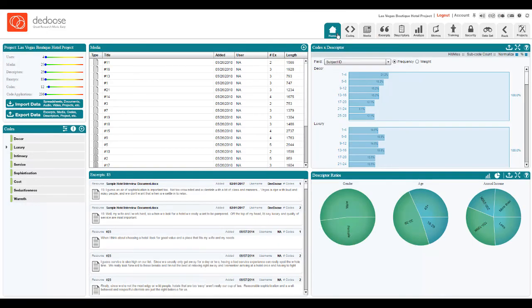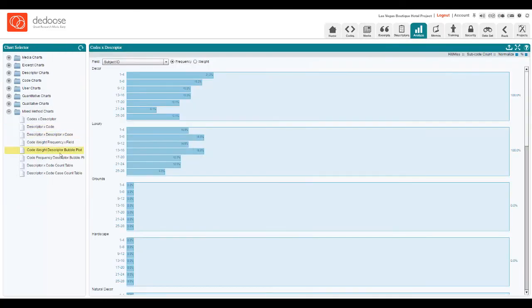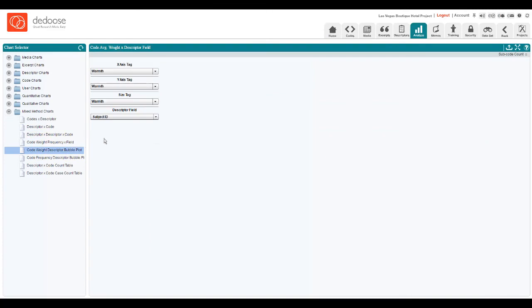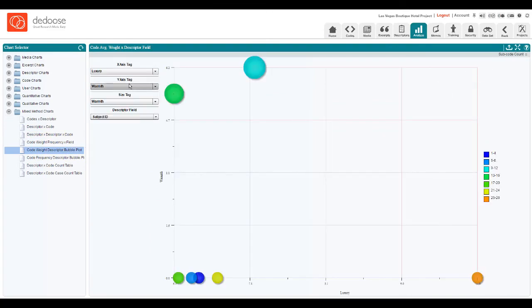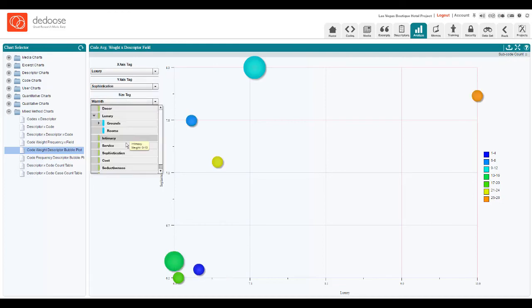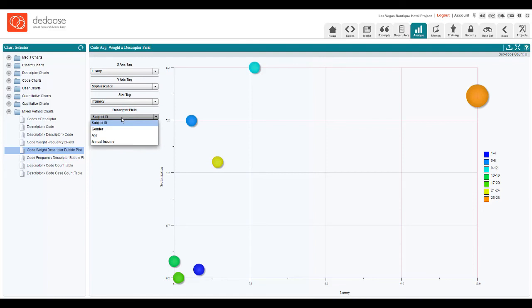Let's say that our deliverable is an analysis and recommendations for advertising for hotels in Las Vegas broken up by particular age groups. The perfect plot in deduce to get to that information is our code weight descriptor bubble plot. So I'm going to select those tags that were particularly important in our study: sophistication, intimacy, and luxury. We're going to break that out by age group.